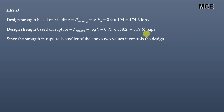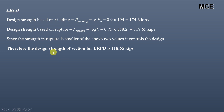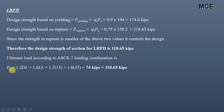Therefore the LRFD design strength for this section is 118.65 kips. The ultimate load per ASCE 7 load combination = 1.2 × dead load + 1.6 × live load = 1.2 × 15 + 1.6 × 35 = 74 kips. Since the ultimate load (74 kips) is less than the design strength (118.65 kips), this section is safe to carry the given loads under LRFD.